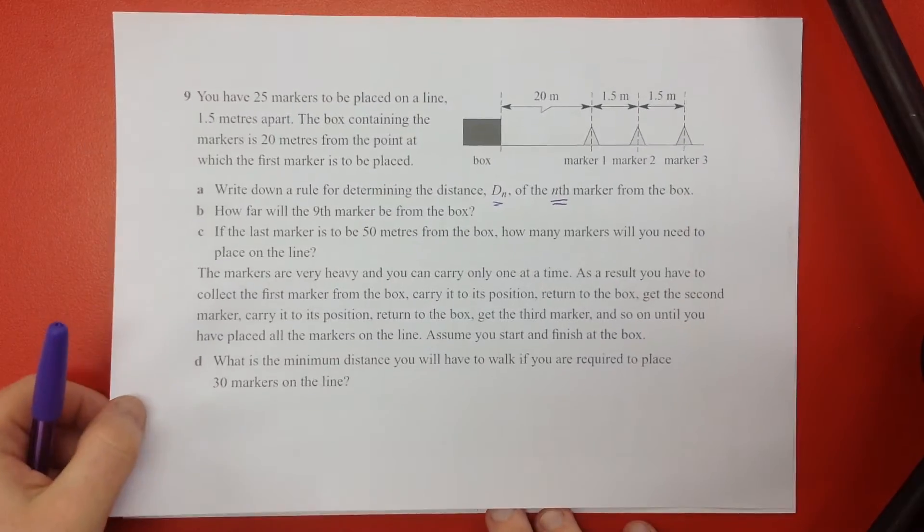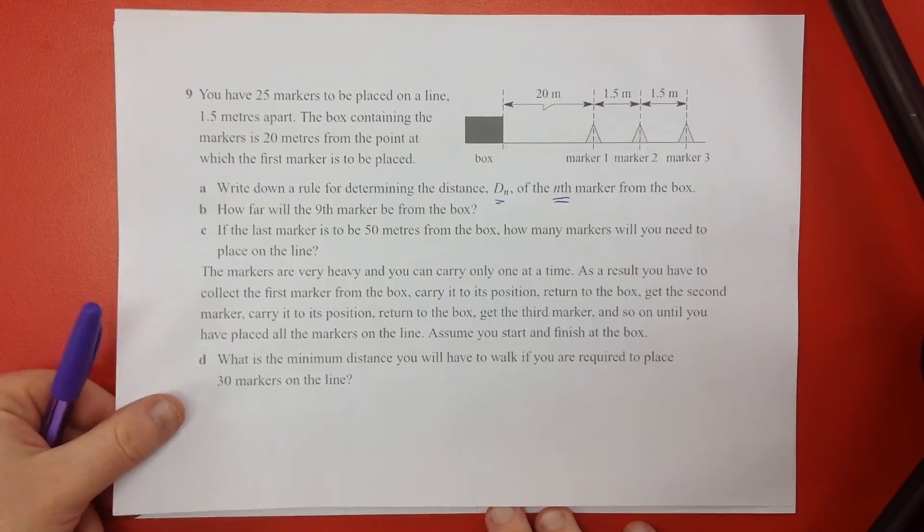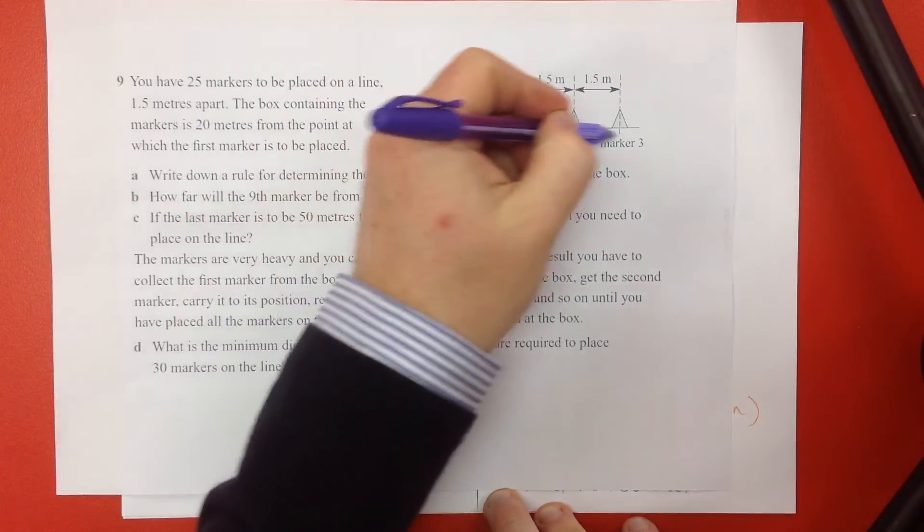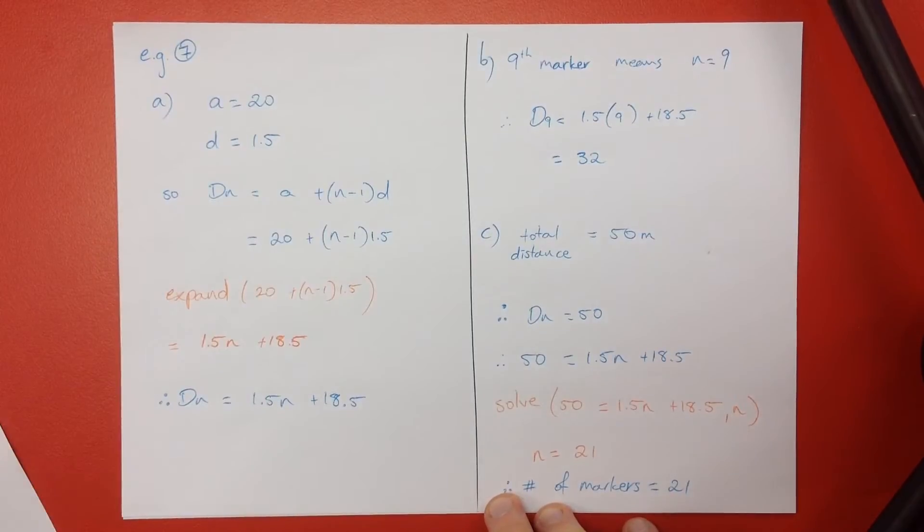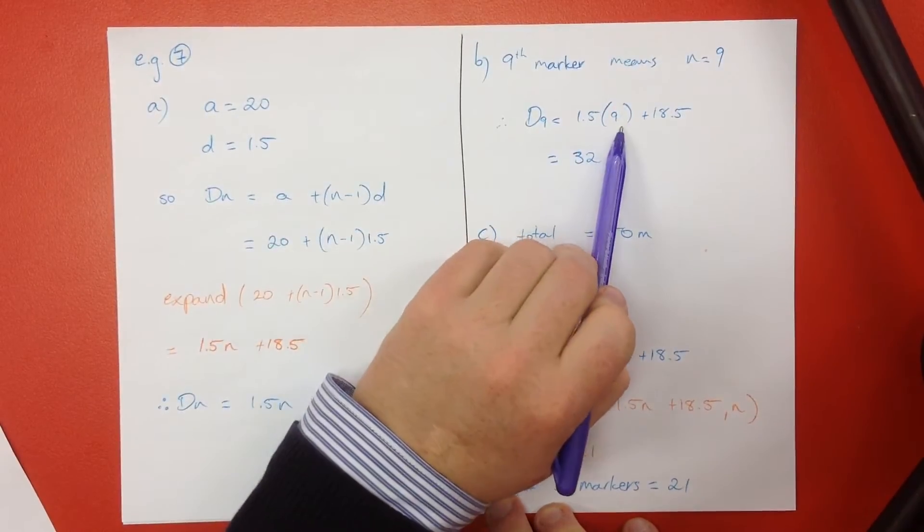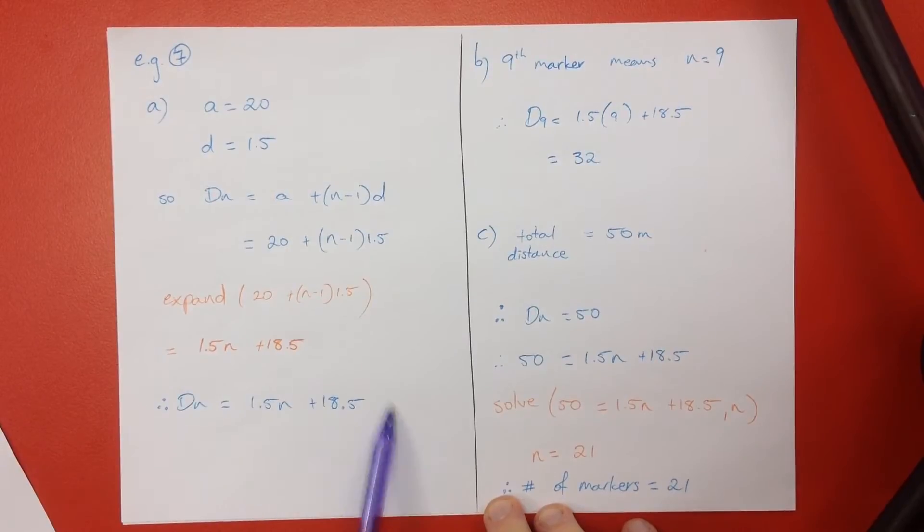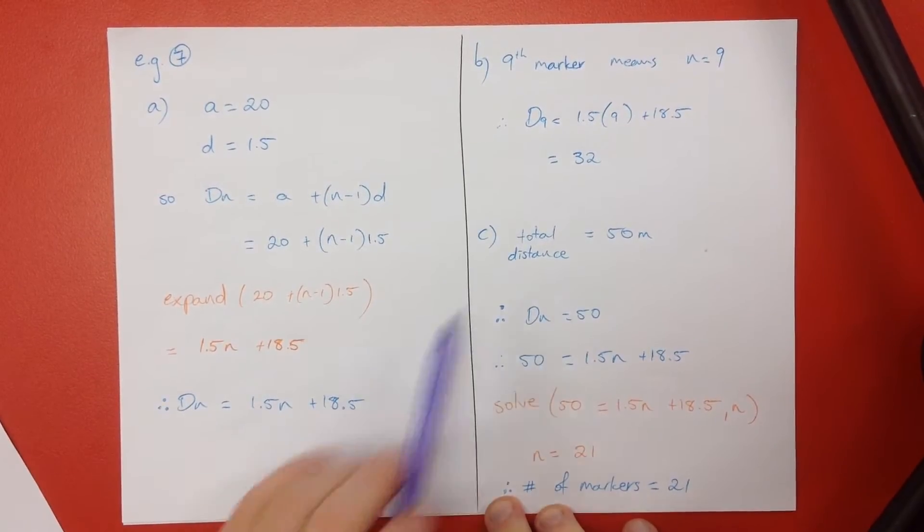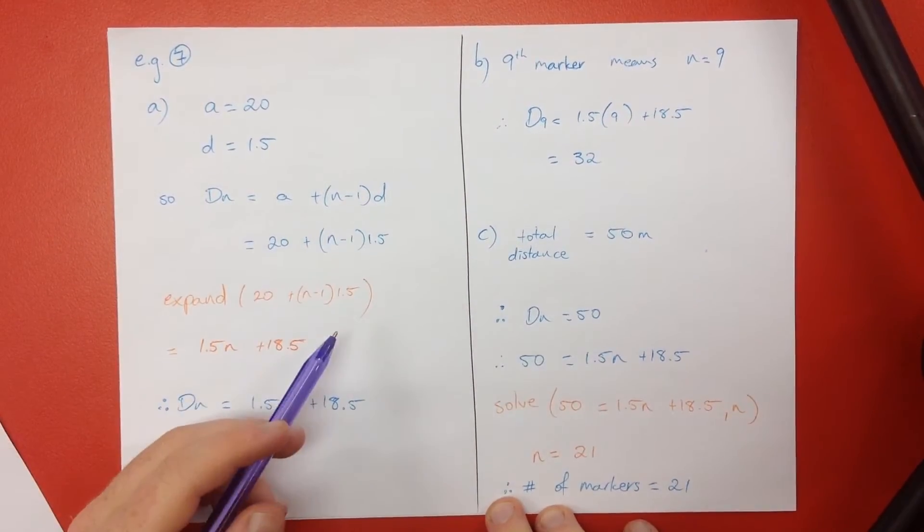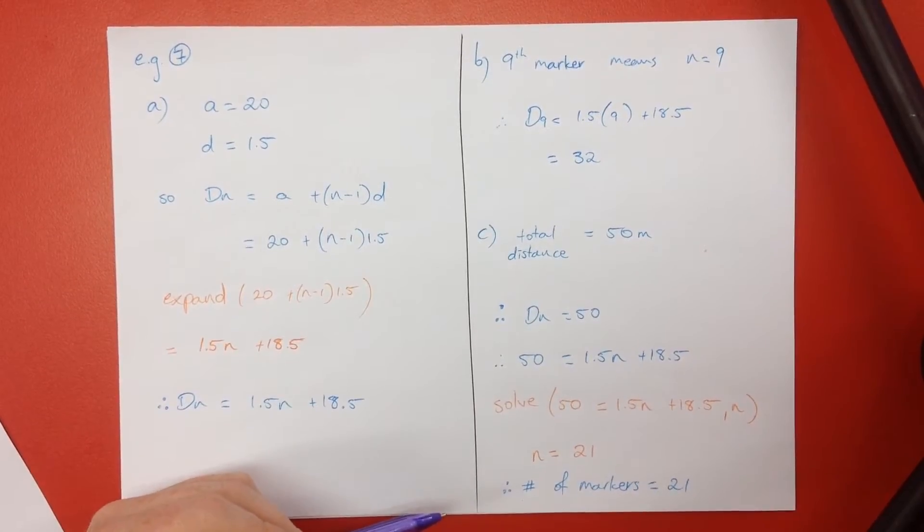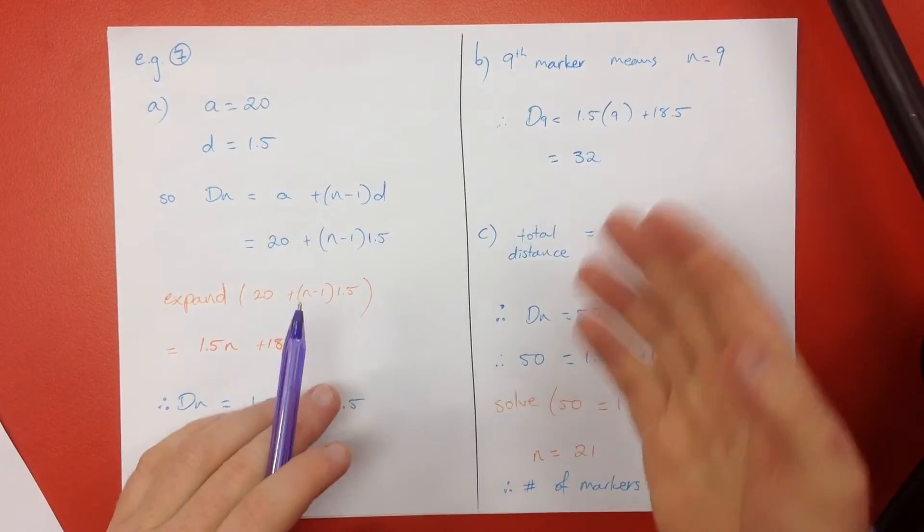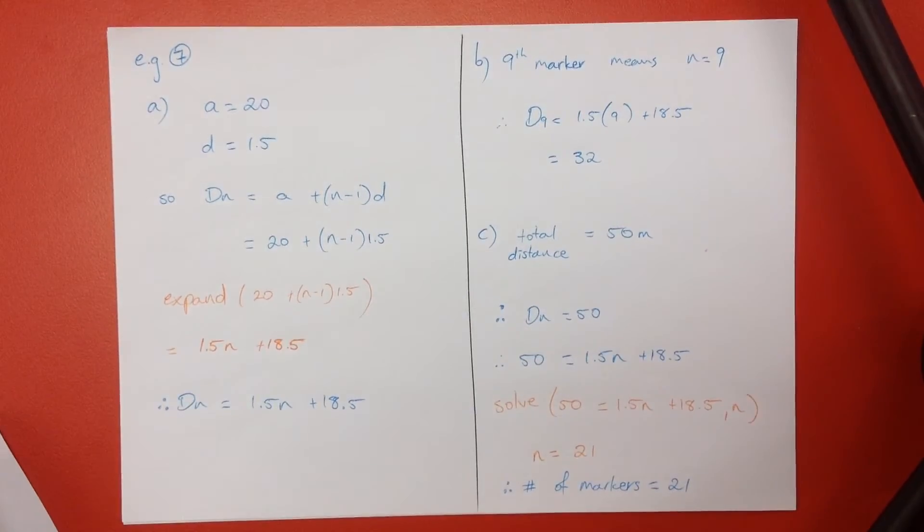Question B, how far will the 9th marker be from the box? So we're looking for not the first, not the second, not the third, all the way up to the 9th marker. So 9 extra lots of 1.5. So we put that in the formula. 9 is our n in our formula. That's the formula there without putting anything in. We just expanded it and told us it was 32. You could use your calculator for that. So the 9th marker is 32 metres from the box. And you might want to say that, but 32 will get you the marks regardless.